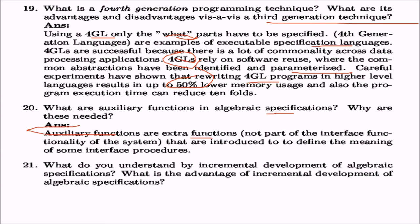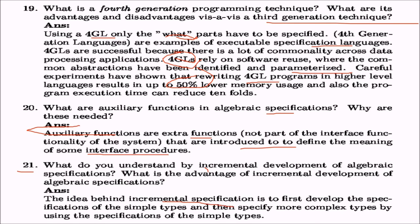Question 20: what are auxiliary functions in algebraic specification and why are they needed? Auxiliary functions are extra functions — not part of the interface functionality of the system — introduced to define the meaning of some interface procedure. They are library modules or extra functions that you are not going to make but are going to use. Question 21: incremental development of algebraic specifications means first developing specifications of simple types, then specifying more complex types by using those simpler specifications, combining and enhancing them to make more complex types.